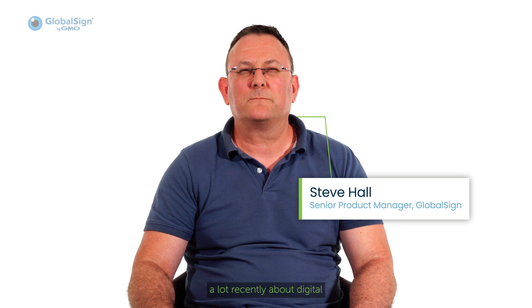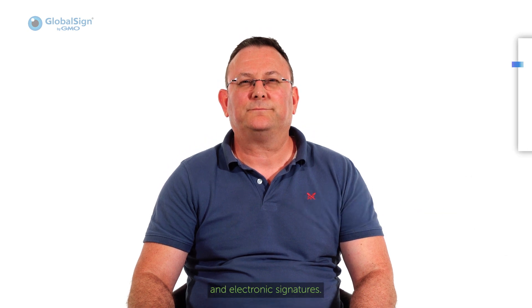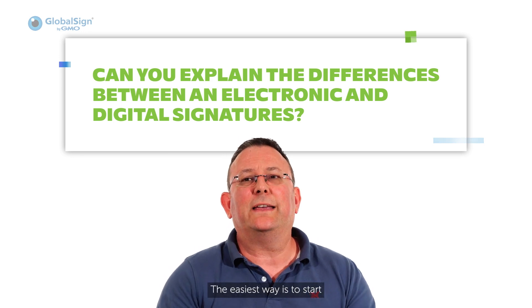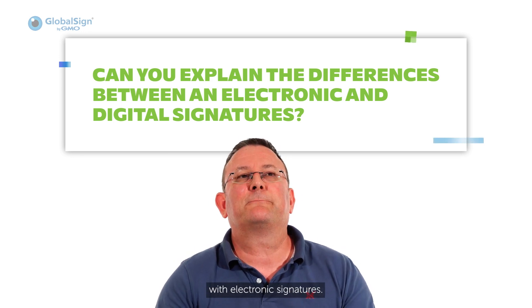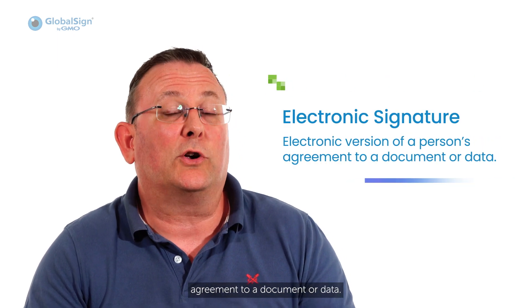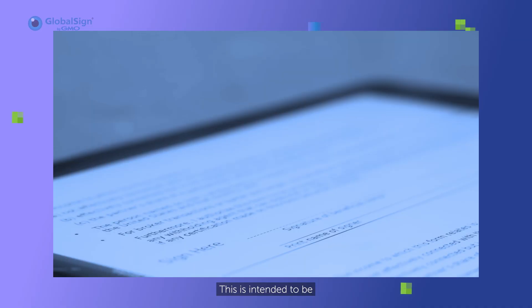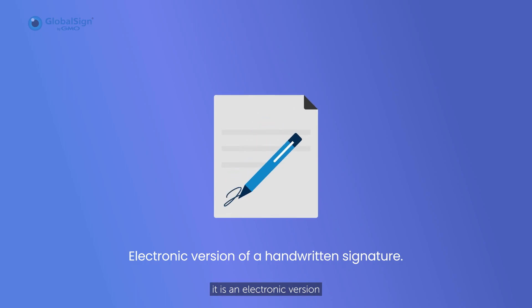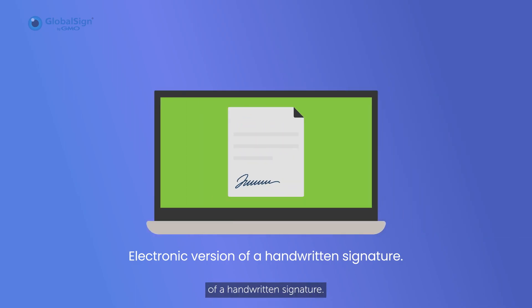So my first question is, I have read and heard a lot recently about digital and electronic signatures. Can you explain what the differences are? Absolutely. The easiest way is to start with electronic signatures. An electronic signature is simply an electronic version of a person's agreement to a document or data. This is intended to be the equivalent of a wet ink signature. In simple terms, it is an electronic version of a handwritten signature.